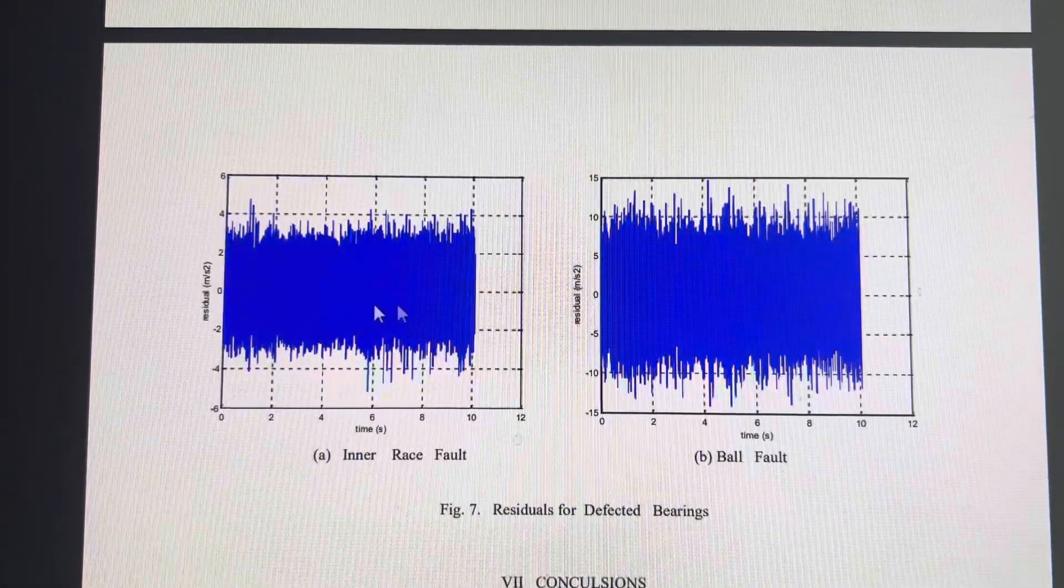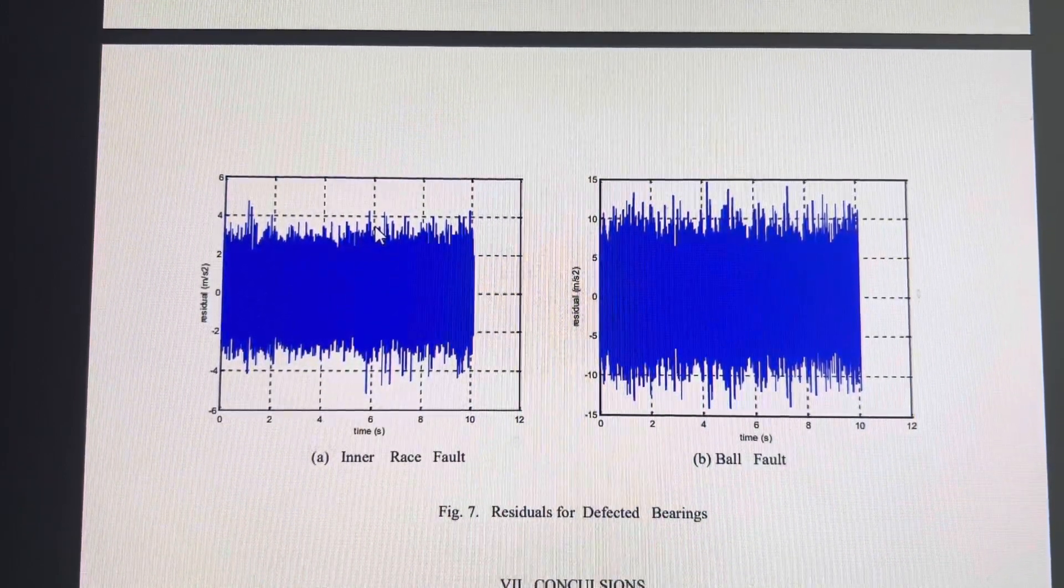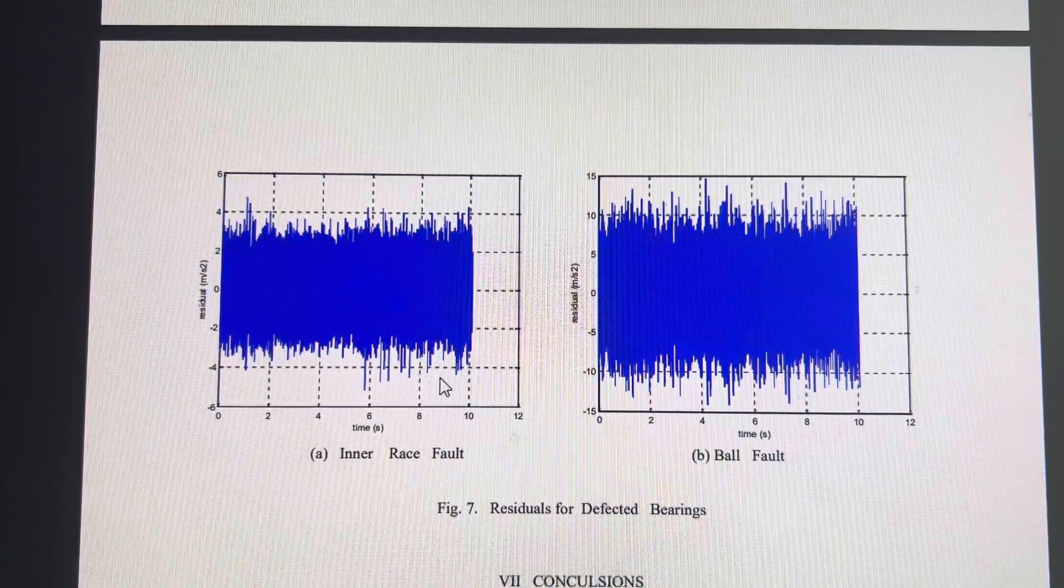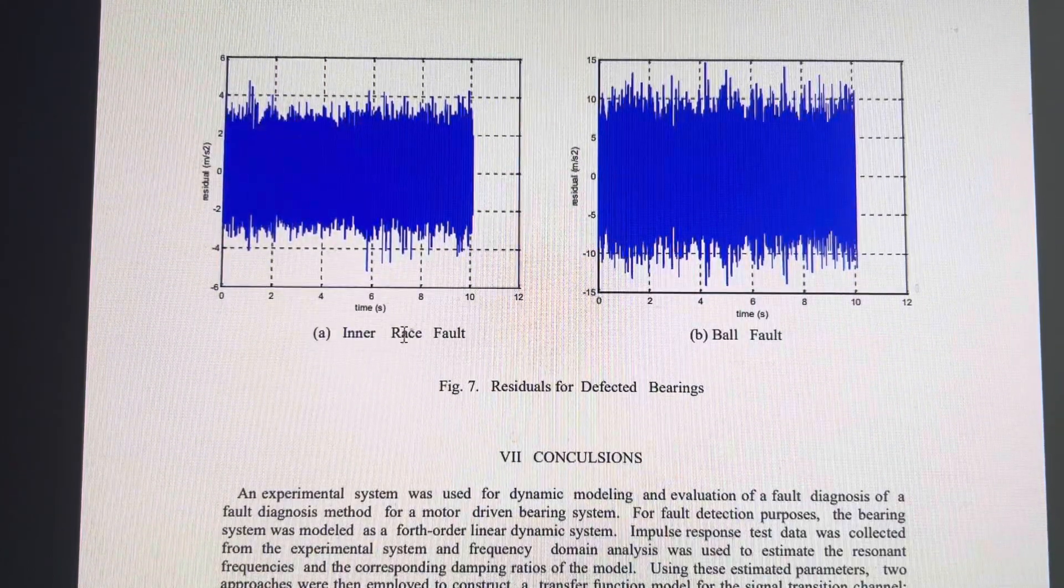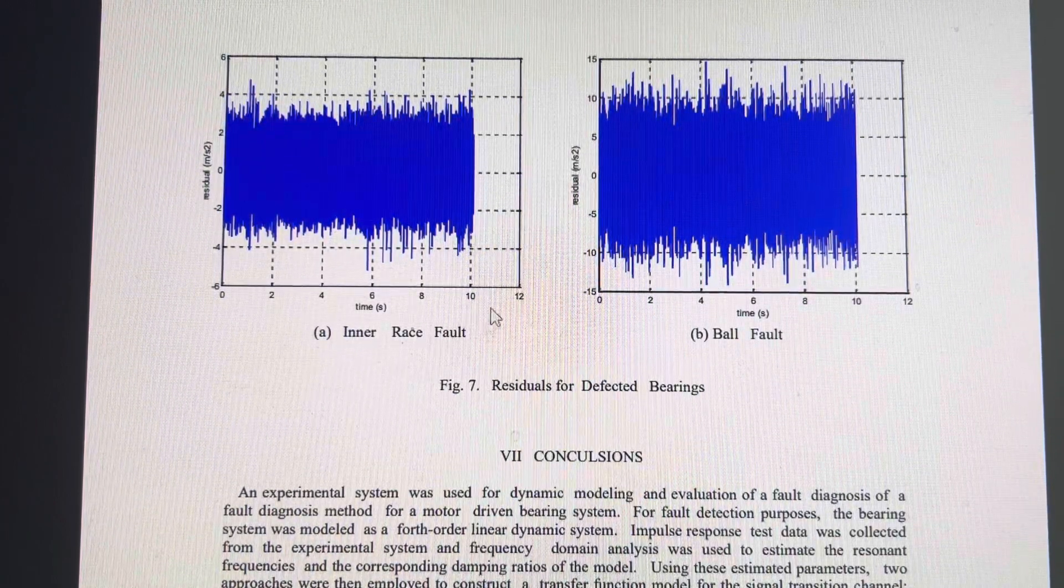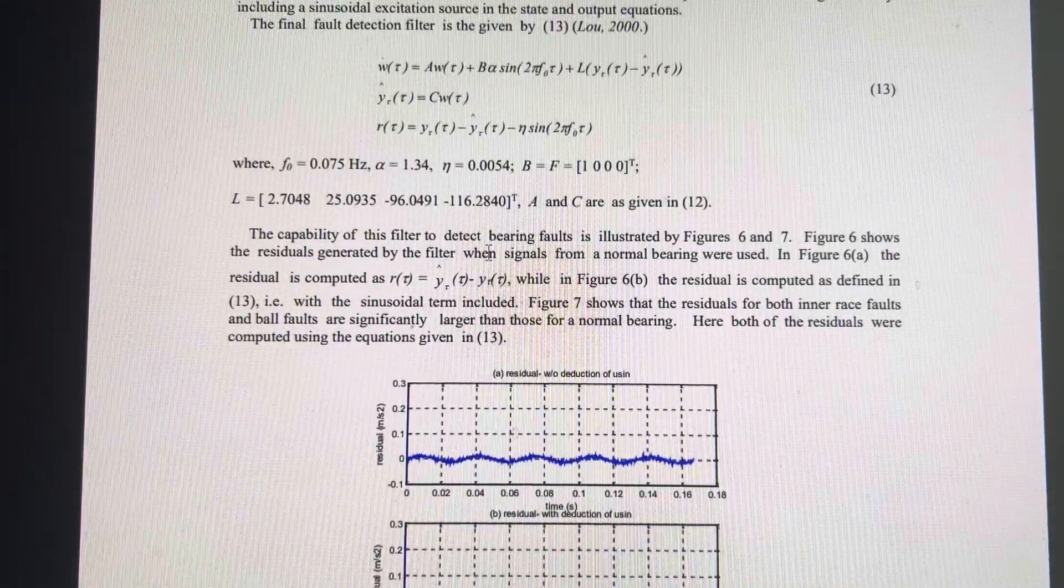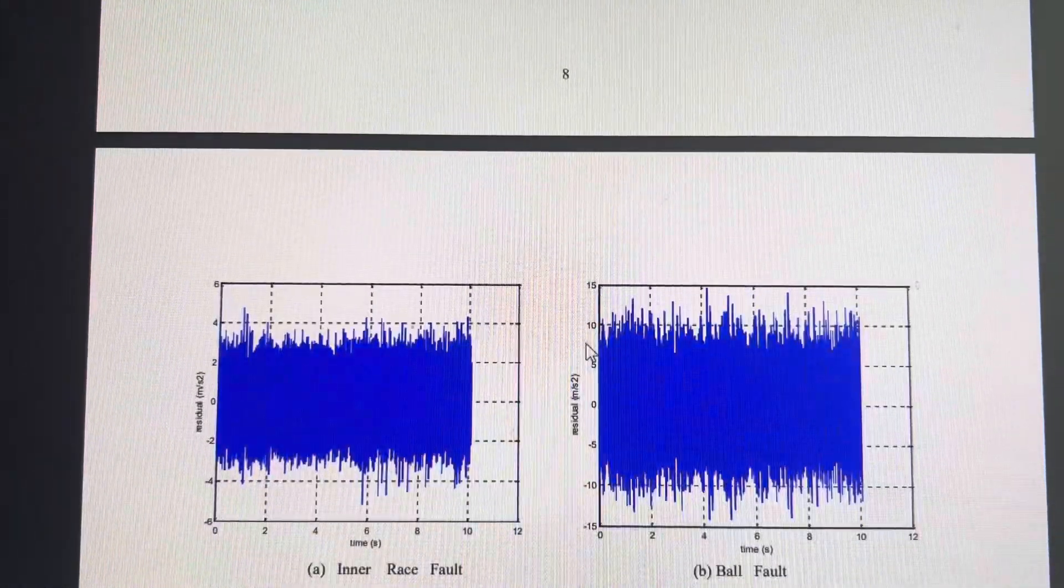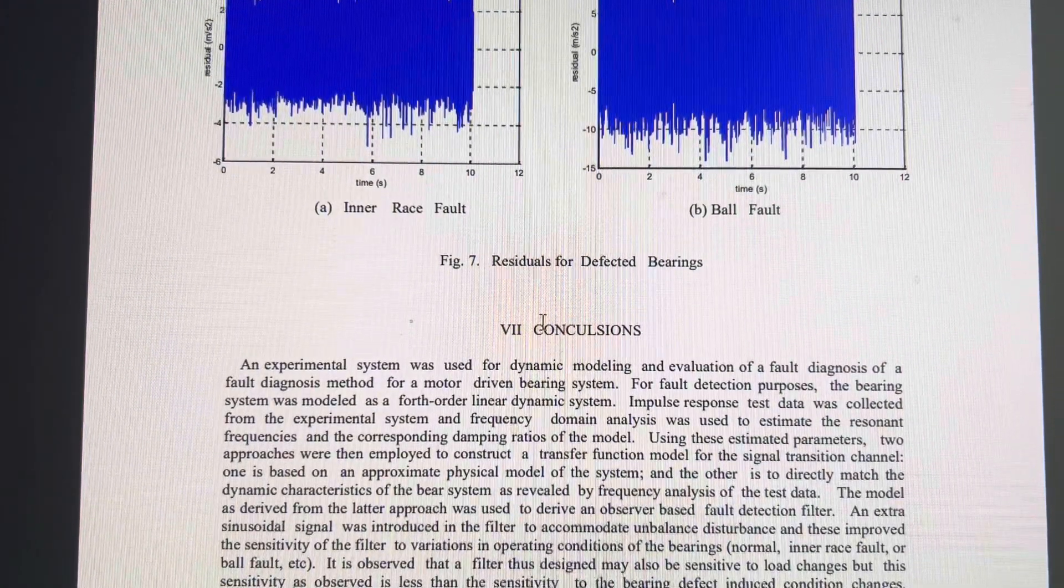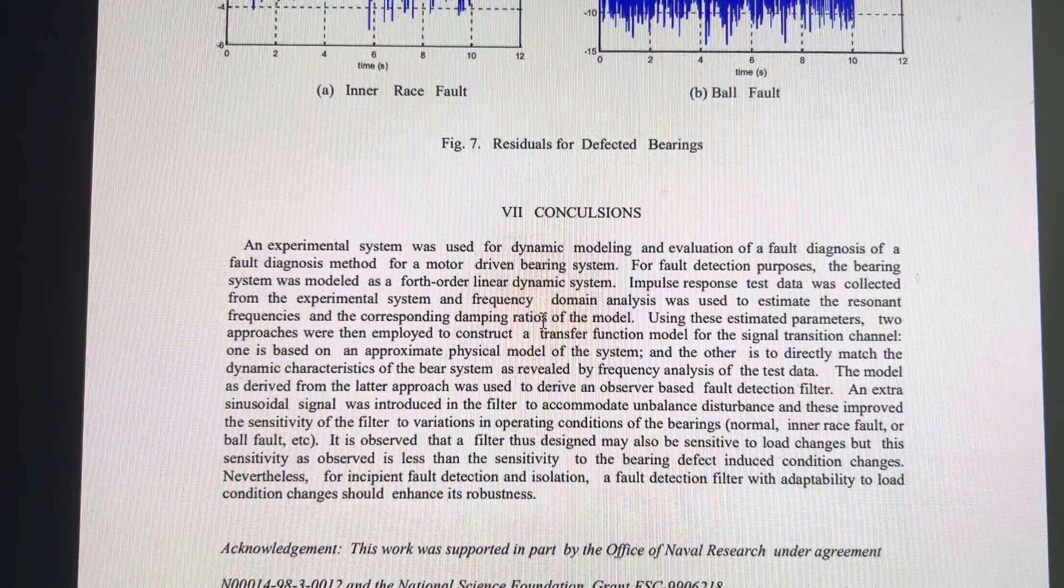Then we feed the defective bearing test model - one is with inner race fault, the other one is with ball fault - so that went past the filter with the parameter set for normal, and we see the residual. So the detection is realized this way.